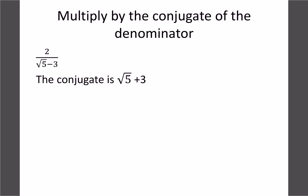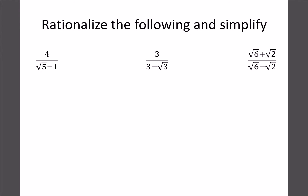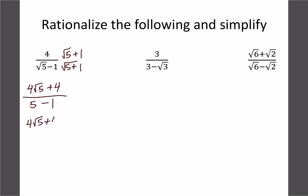For the next example with root 5 minus 1 in the denominator, the conjugate is root 5 plus 1. Multiplying gives 4√5 plus 4 on the top. On the bottom, root 5 times root 5 is 5, the middle terms cancel, and minus 1 times 1 gives minus 1, so 5 minus 1 equals 4. We have 4√5 plus 4 over 4 — we can factor out the 4s, giving us root 5 plus 1 as our simplest answer.